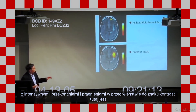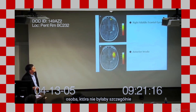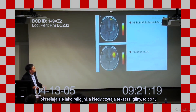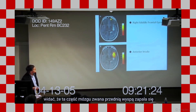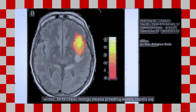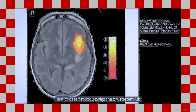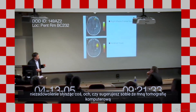In marked contrast, here's an individual who would not particularly self-describe as religious, and who had low levels of the VMAT2 gene. When they're read a religious text, what you see is that a part of the brain called the anterior insula lights up. This is a part of the brain associated with disgust or displeasure on hearing something.